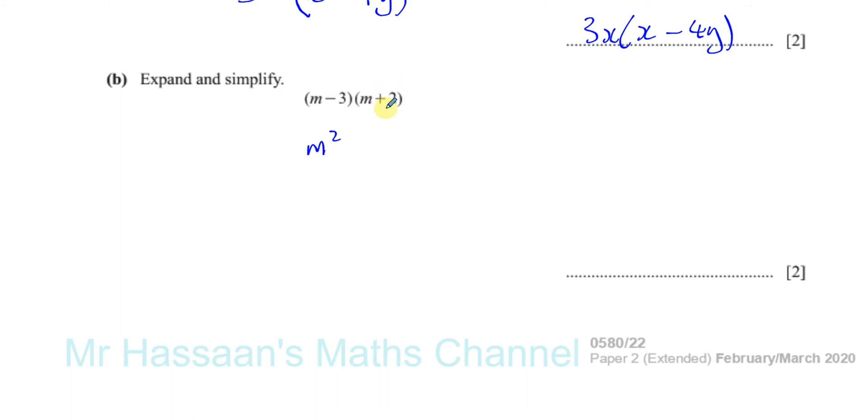This number and that number added together. So minus three plus two is minus one, so it's going to be minus m. Okay, the middle term will always be the sum of those two, and the last term will always be the product of those two, which is minus six.